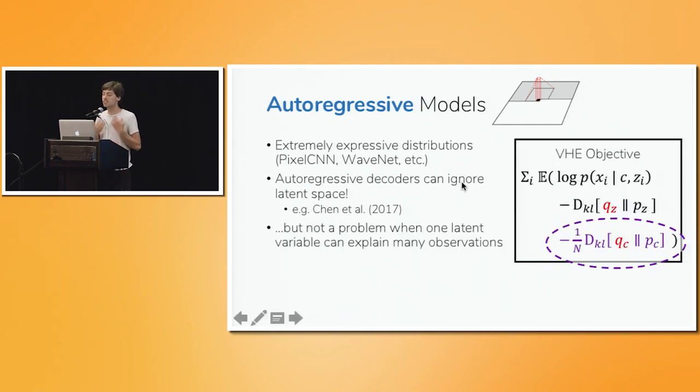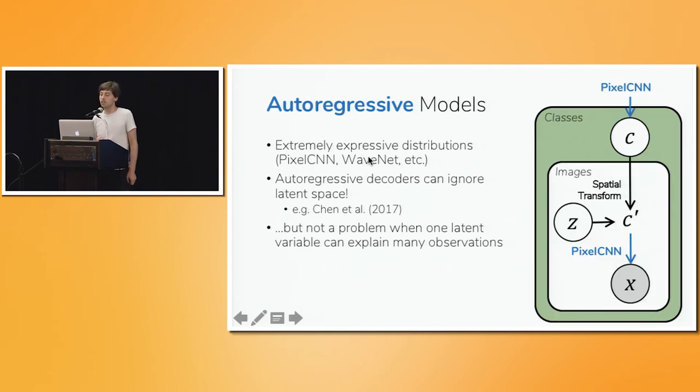With a variational homoencoder, we want the same latent variables to explain a very large number of data points, which shows up as this one over n factor in the encoding cost. And fortunately, this rescaling factor has the effect of allowing the class level latent variables to be used much more effectively. And so to show this, we developed an expressive generative model for images where the class latent variable c is a 3D tensor with a PixelCNN prior. And for generation, an affine transform is applied to this tensor, and then we render the result using a second PixelCNN.